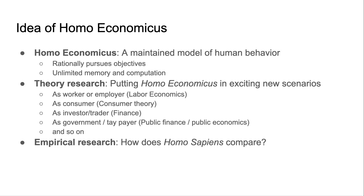Where people really scratch at this core assumption is behavioral economics, where you say people actually seem to be present-biased, underweight small probabilities, or are subject to certain cognitive biases. But most research in econ is still in the tradition of assuming people rationally pursue their objective. What economists usually mean by rationality is pursuing some objective in a systematic way — people will do things to pursue their objectives.